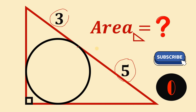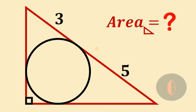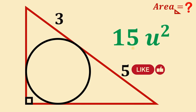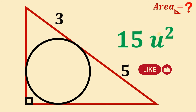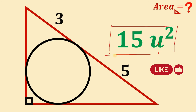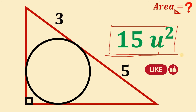Now let's answer this question together. Before we show the solution, let's have the final answer first. The final answer is simply 15 square units. Now the question is how do we get these 15 square units? Here's our solution.